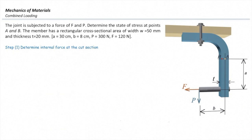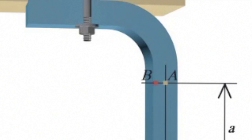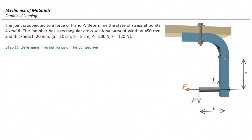The joint is subjected to forces F and P. We need to determine the state of stress at points A and B. The member has a rectangular cross-sectional area with a width of 50 mm and a thickness of 20 mm. The parameters are: A = 30 cm, B = 8 cm, P = 300 N, and F = 120 N. This is what we have called combined loading in chapter 5. I would like to review the concept again and extend it into three-dimensional problems.